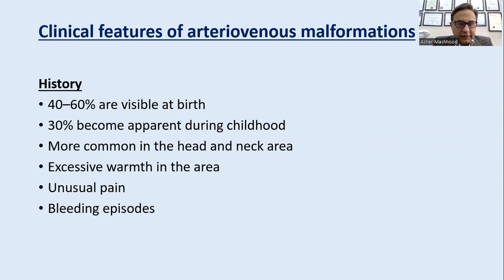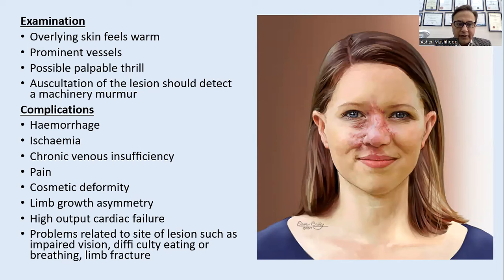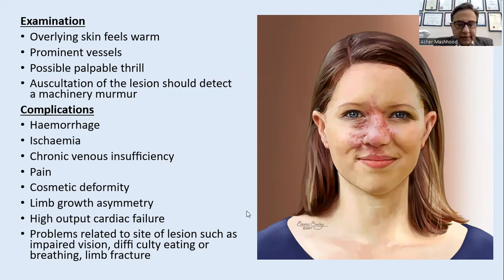Clinical features of AV malformation: 40–60% are visible at birth, 30% become apparent in childhood. Most common at head and neck. There is excessive warmth in the lesions, pain, and bleeding episodes. The overlying skin feels warm, there are prominent vessels, and a palpable thrill. Auscultation should detect a machinery murmur. Complications include hemorrhage, ischemia, chronic venous insufficiency, pain, cosmetic deformity, limb growth asymmetry, high-output cardiac failure, and problems such as impaired vision, difficulty eating or breathing, and limb fractures.